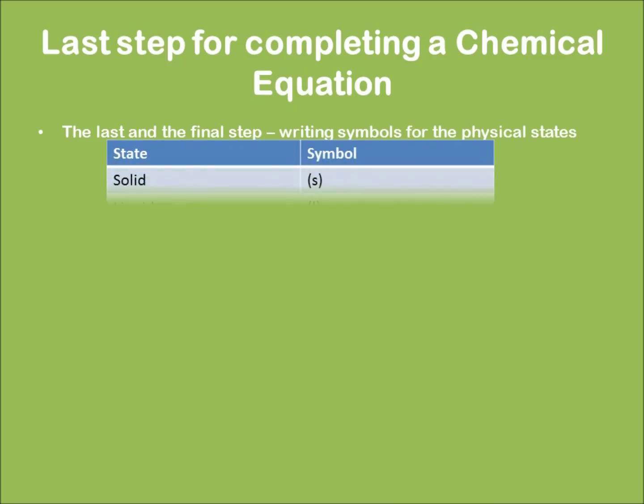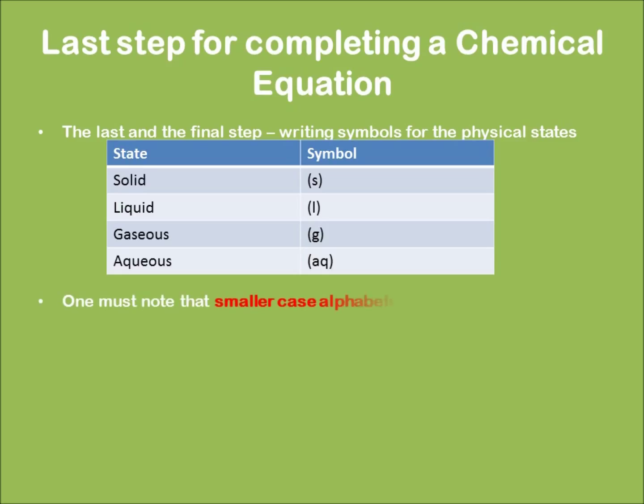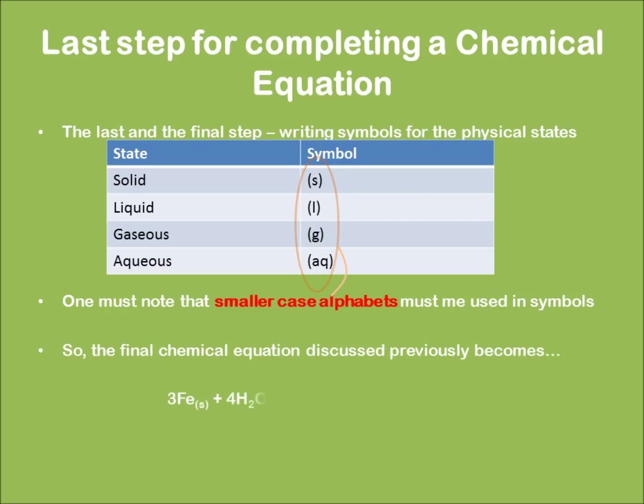The states list has been given in tabular form. One must note that the states must be shown in smaller case alphabets only. So my previously discussed example will now become the following equation. This one is a finally balanced chemical equation. That's it.